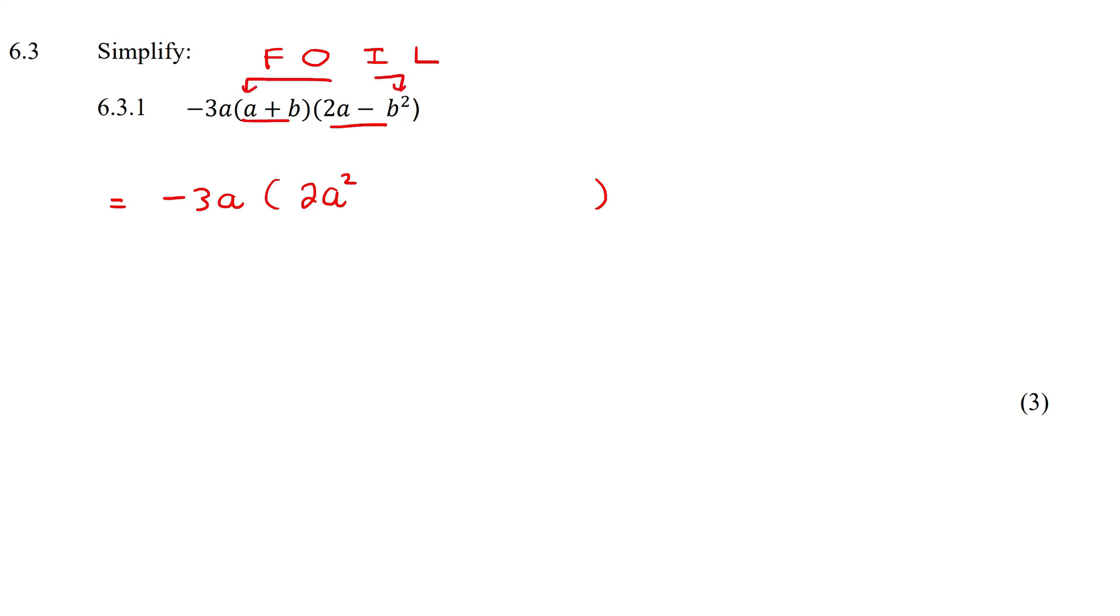So there and there. So what would happen if you multiply a and -b²? Well, that'll just give you -ab².